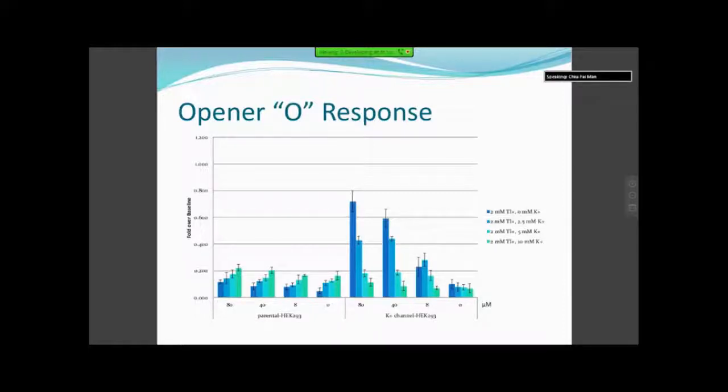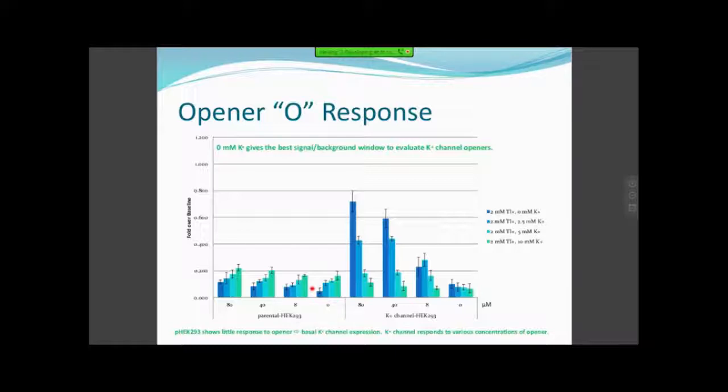This shows the data analysis for the opener O that I spoke about previously. There's the parental cell line and the potassium channel expressing cell line, four different concentrations of the opener in micromolar. On the y-axis is fold over baseline, and the four different conditions have four different concentrations of potassium: zero, 2.5, 5, and 10. What you see is that the zero millimolar potassium gives us the best signal to background window to evaluate potassium channel openers, shown here in the dark blue. The parental cells show very little response to the opener, and whatever response you see is essentially just the basal level of expression of whatever potassium channels are there.